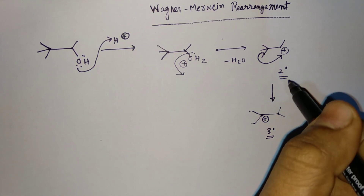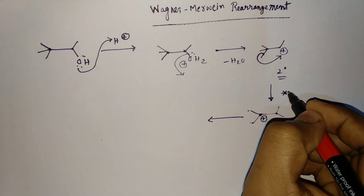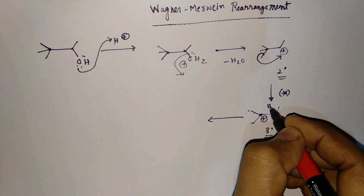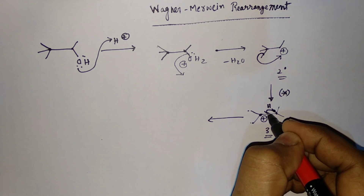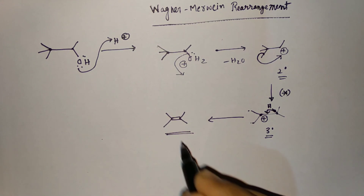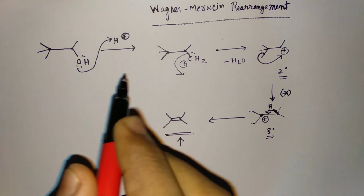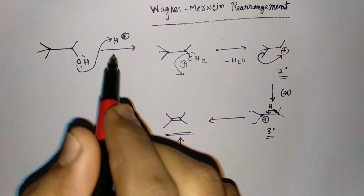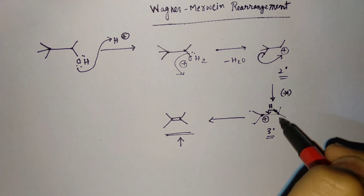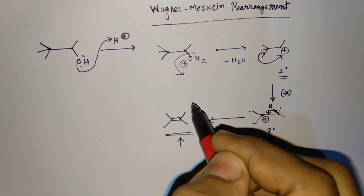This 3° carbocation is more stable than the 2° carbocation, and this stability difference is the driving force for converting the 2° carbocation to the 3° carbocation. In the next step, a hydrogen atom is present and deprotonation occurs, giving the final alkene product in Wagner-Meerwein rearrangement.